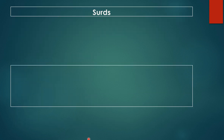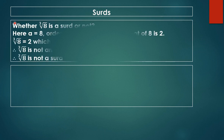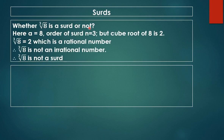Now another example: is the cube root of 8 a surd? Here the radicand a equals 8 and the order is 3. But the cube root of 8 is 2, and 2 is a rational number. So the cube root of 8 is not an irrational number, and therefore the cube root of 8 is not a surd. This is how we determine whether a given number is a surd or not.